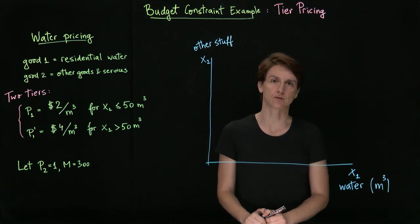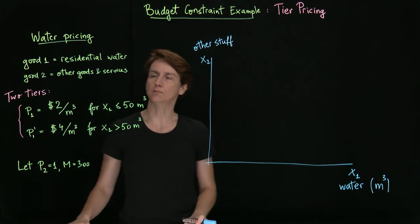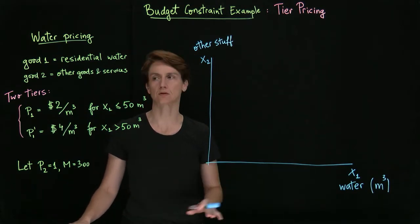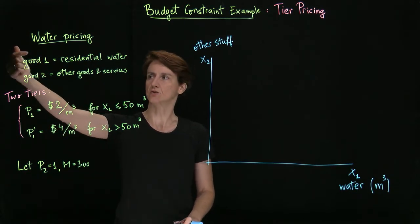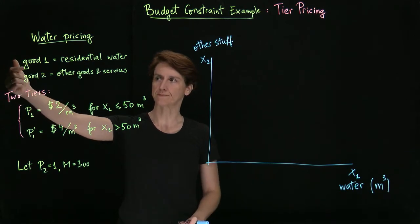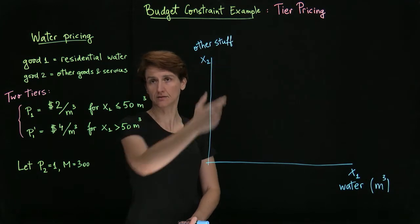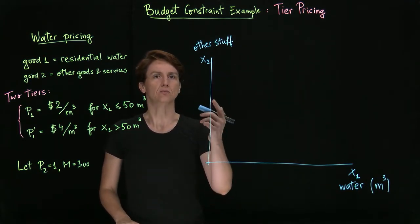Let's consider the following example for budget constraint. Suppose that we're concerned with the price of residential water, so the water that gets piped to people's homes. We're going to look at that as good one versus other things that the household might spend on. In good two we're going to group anything else, and for convenience we'll set the price to be one.